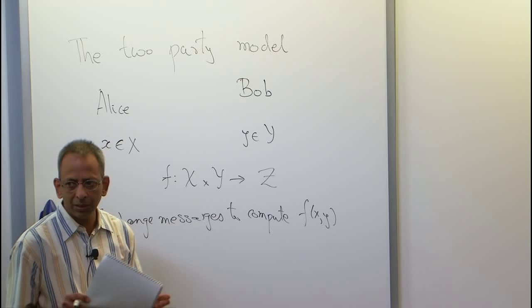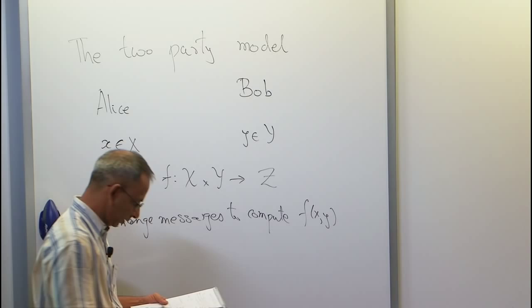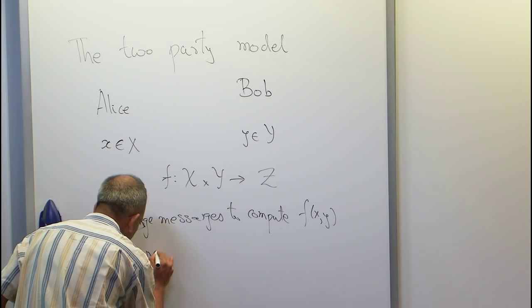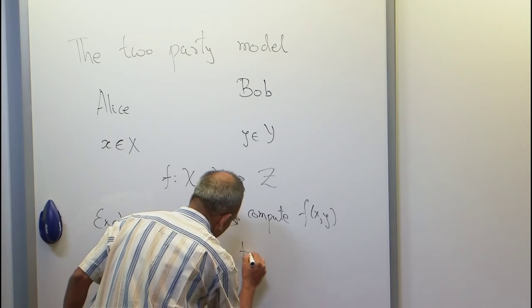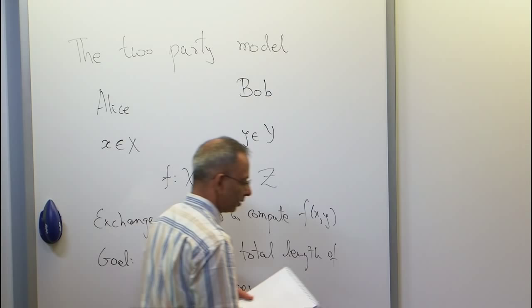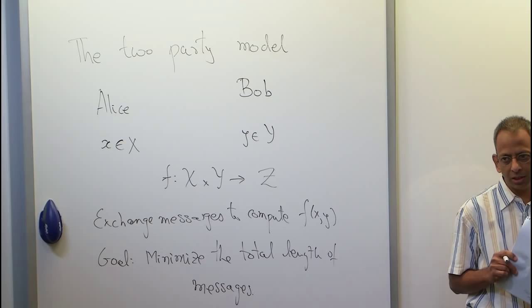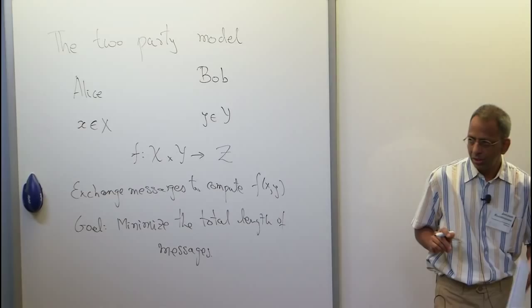Their goal is to minimize the total amount of communication — that is, the total length of messages that go between Alice and Bob. They do this using a protocol, and for our purposes today, what we mean by a protocol is a tree.